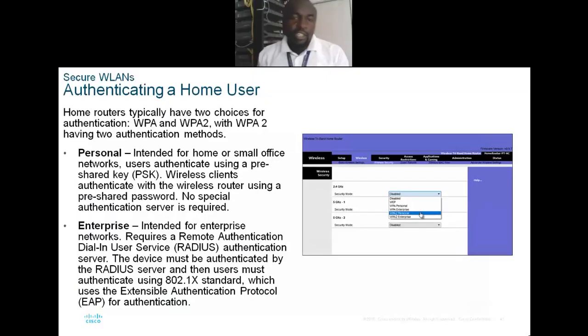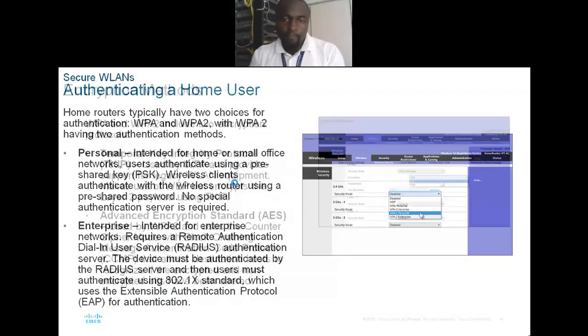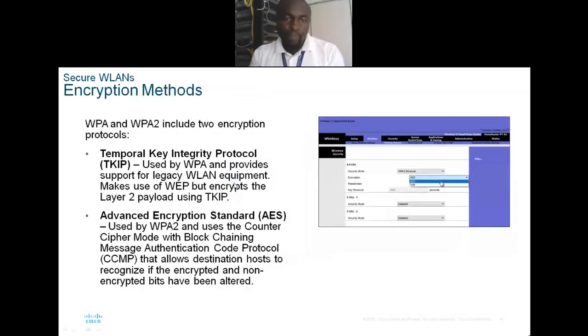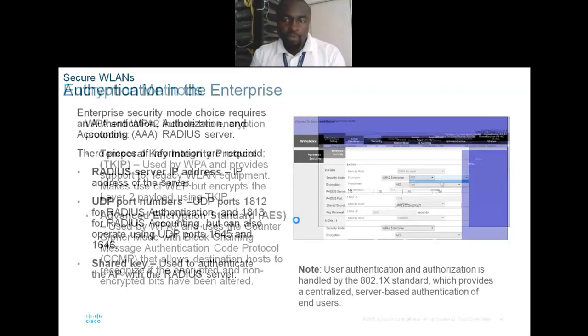For authenticating a home user, you can use personal mode with a shared password, or enterprise mode where you set up a RADIUS server to populate and authenticate users. For encryption, you have TKIP — the Temporal Key Integrity Protocol — and AES, the Advanced Encryption Standard, which is even more secure.